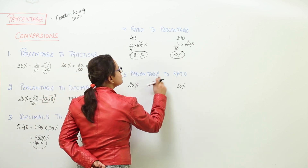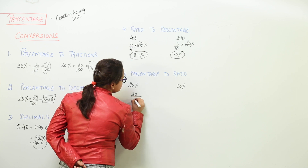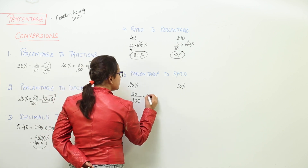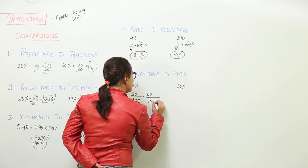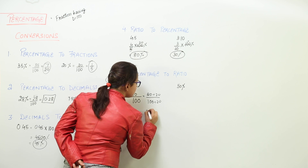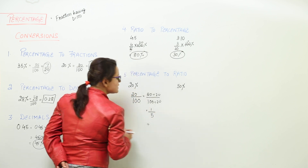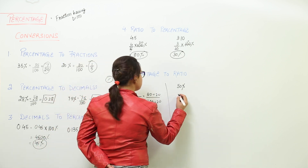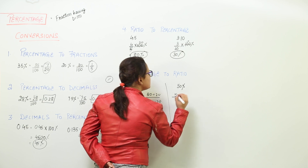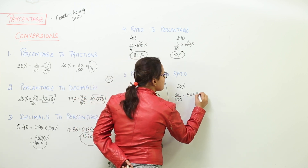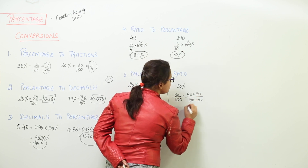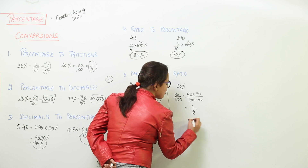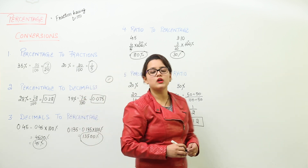The last is the percentage to ratio conversion. To get rid of the percentage sign, we write 20 over 100. This simplifies further — the common factor is 20, so dividing both gives 1 over 5, and we write the ratio as 1 is to 5. For 50 percent, we write 50 upon 100, simplify by dividing by 50, and land up with 1 by 2, written as the ratio 1 is to 2. So this is how conversions are done from one form to the other.